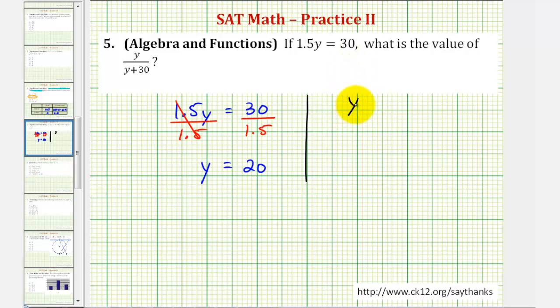So if we have y divided by the quantity y plus 30, and we know y equals 20, we'll substitute 20 here and here. So this would give us 20 divided by the quantity 20 plus 30.